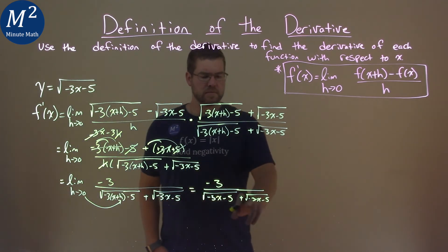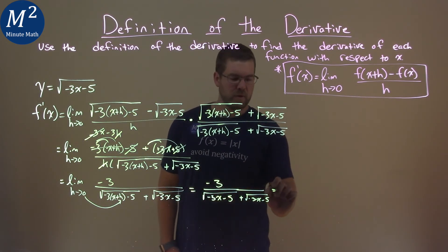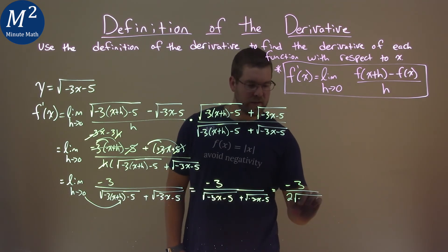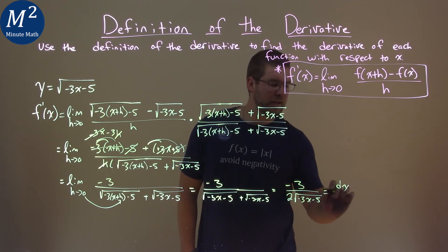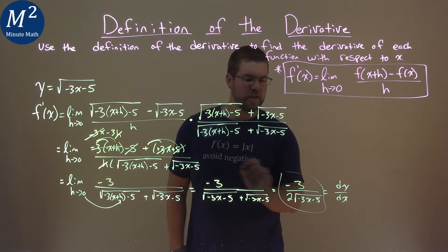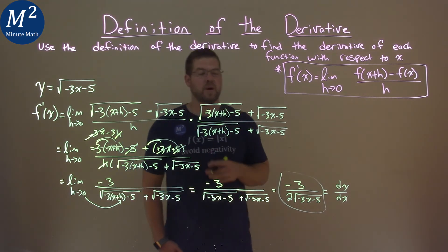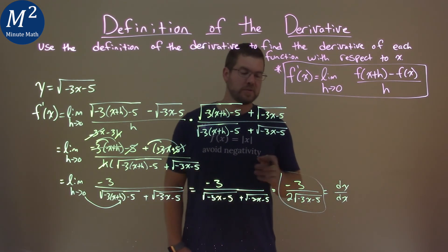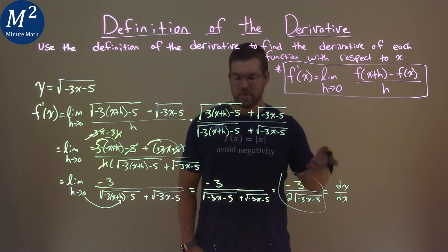Well, right there, that's two of them, right? So we can rewrite this to be negative 3 over 2 square root of negative 3x minus 5. And I'll tell you what, I'm done. That's our dy dx, our derivative, our y prime or f prime of x. And so, our final answer is negative 3 over 2 times the square root of negative 3x minus 5.